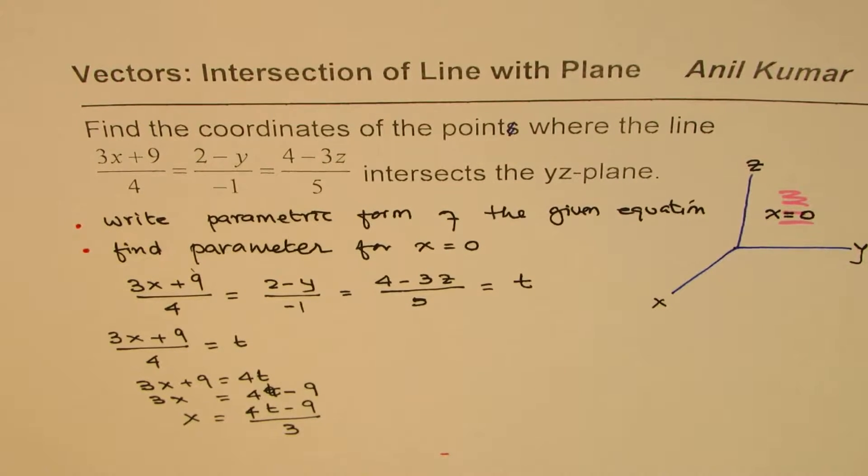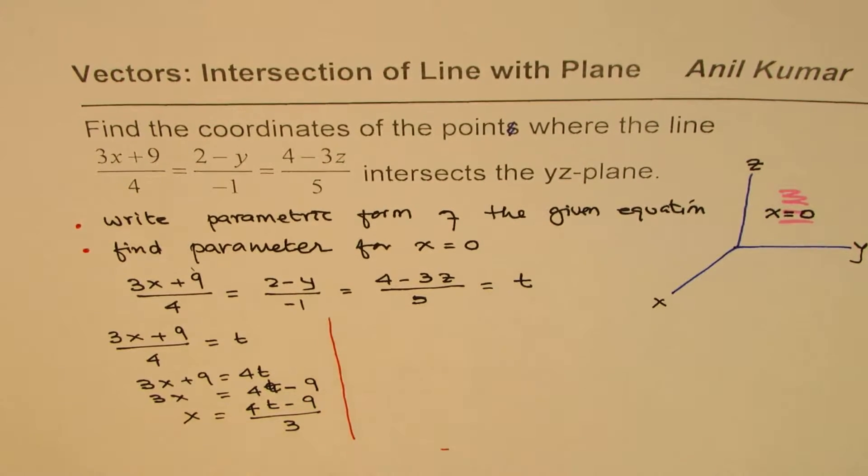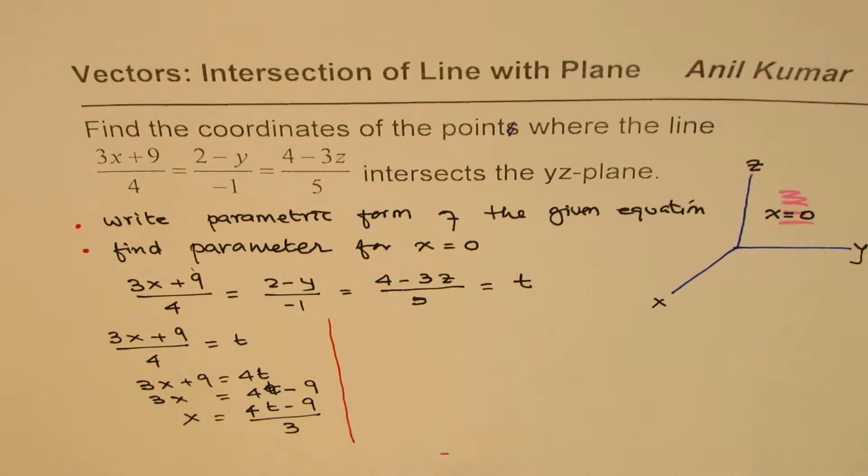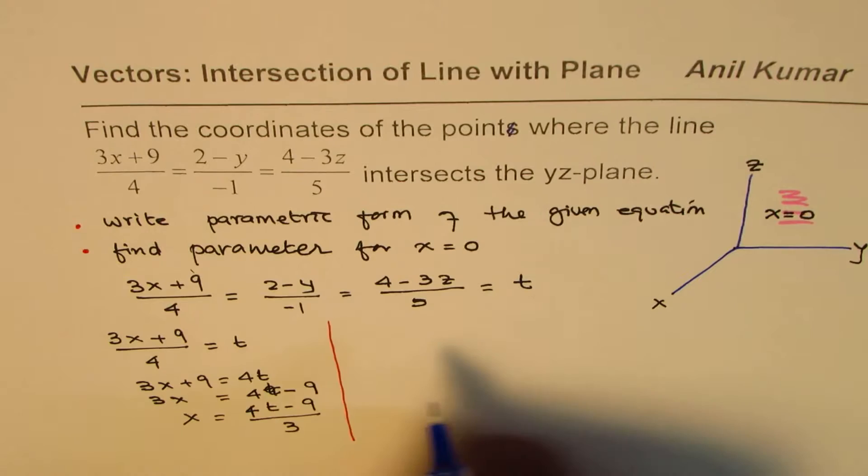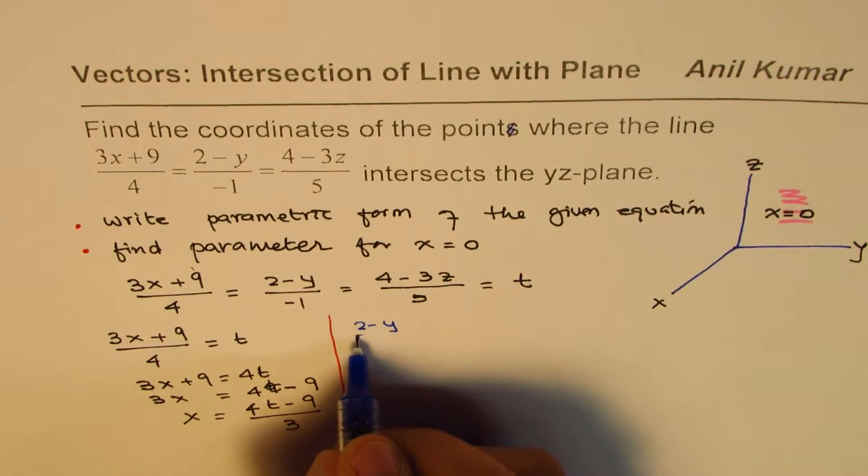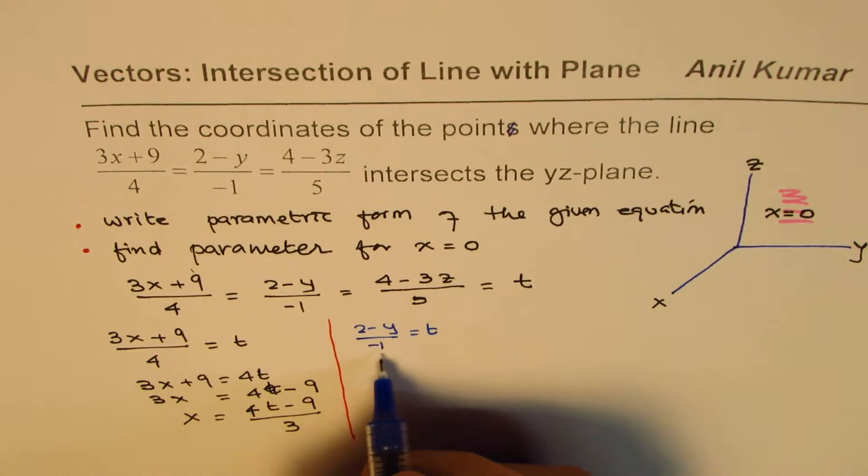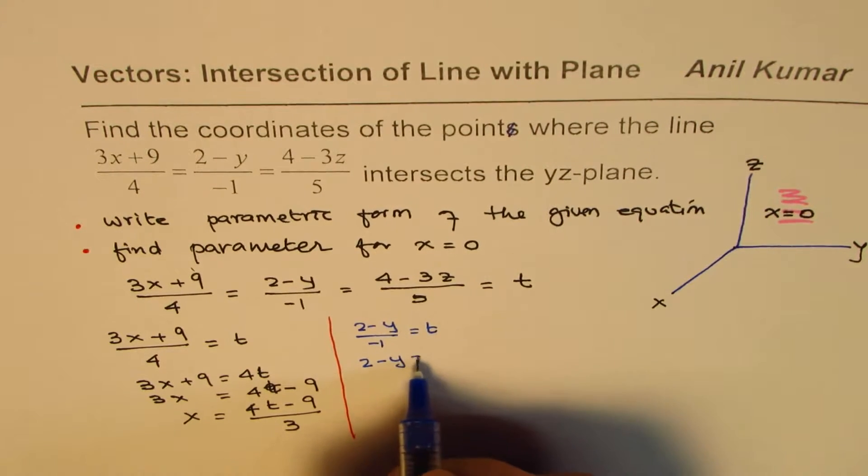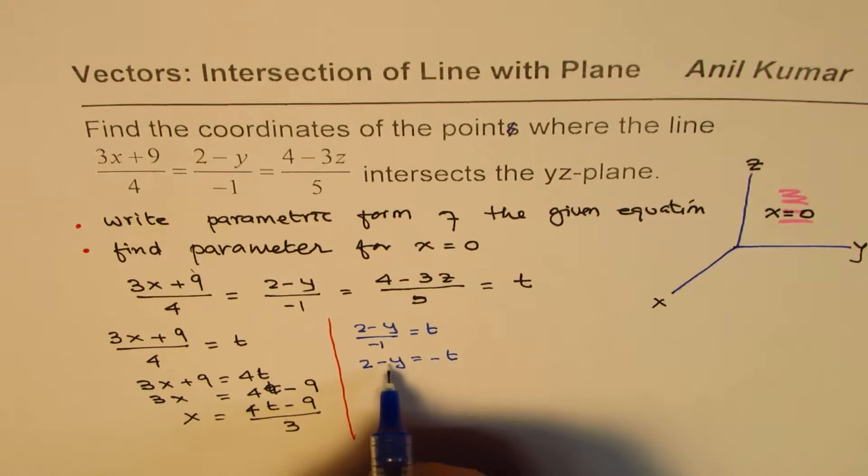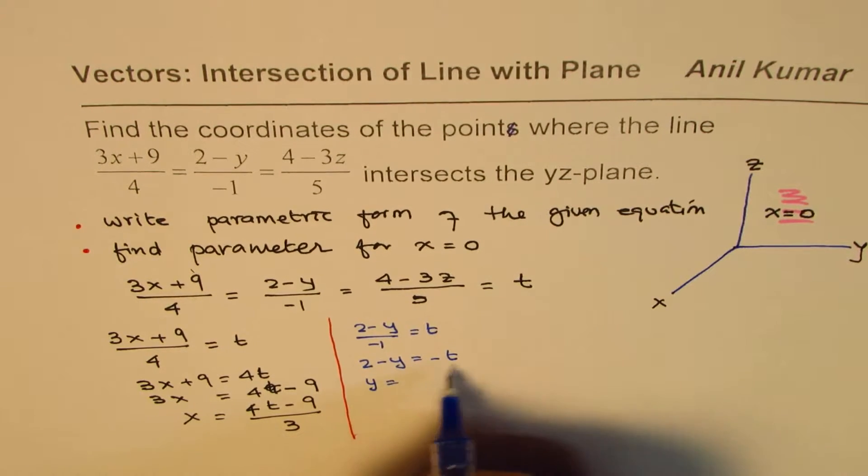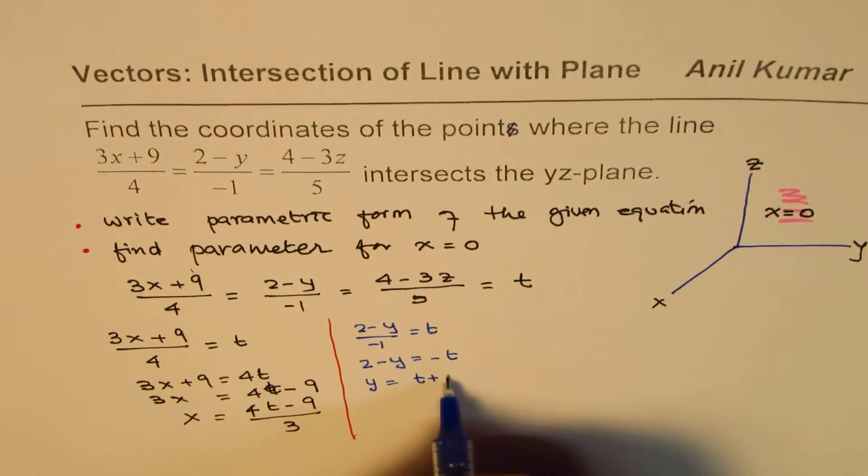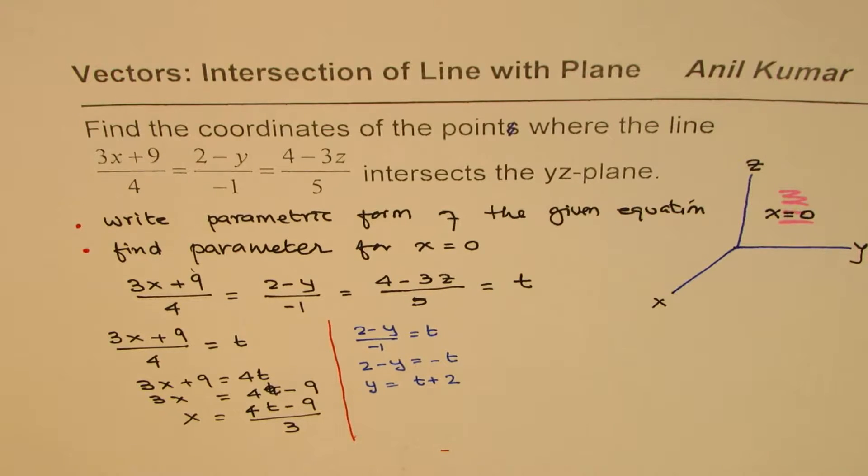Similarly we can write others also. (2-y)/(-1) = t and that gives you 2-y = -t. Bringing y to this side and t to this side we get y = t+2. So that's the second equation.